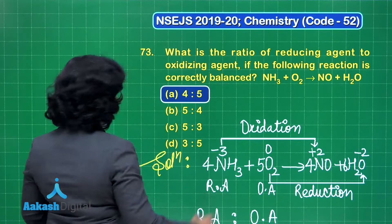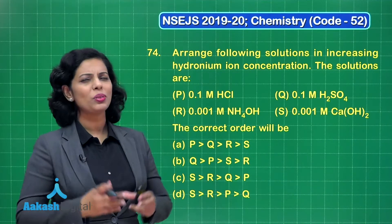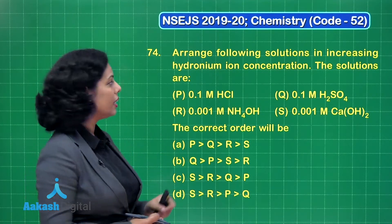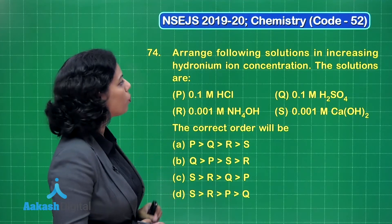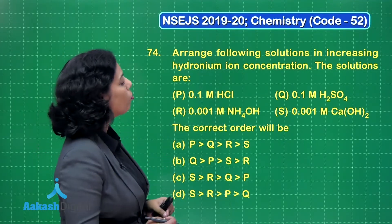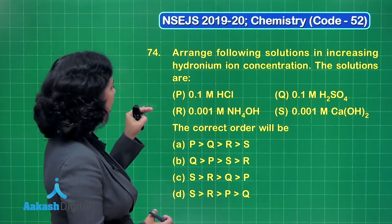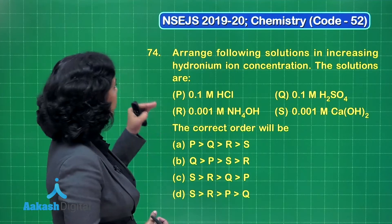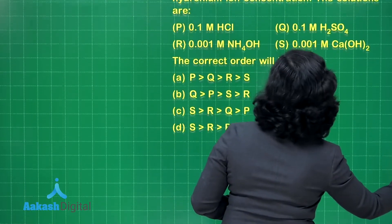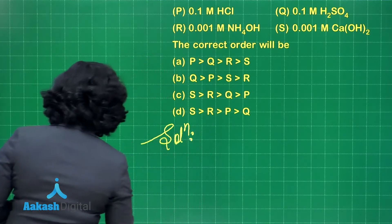Now question number 74: arrange the following solutions in increasing hydronium ion concentration. The solutions are 0.1 M HCl, 0.1 M H2SO4, 0.001 M NH4OH (ammonium hydroxide), and 0.001 M calcium hydroxide. P and Q are acidic solutions while R and S are basic solutions. We need to arrange them by increasing hydronium ion concentration.